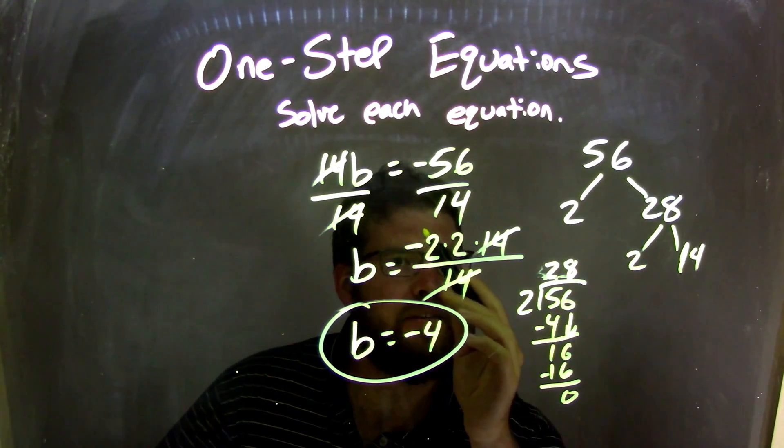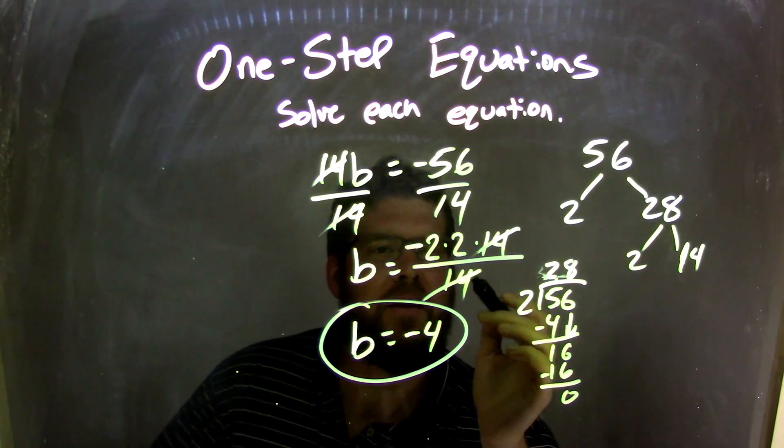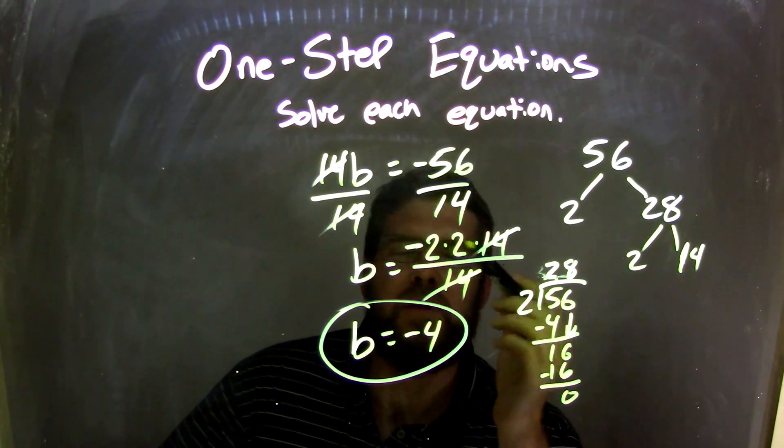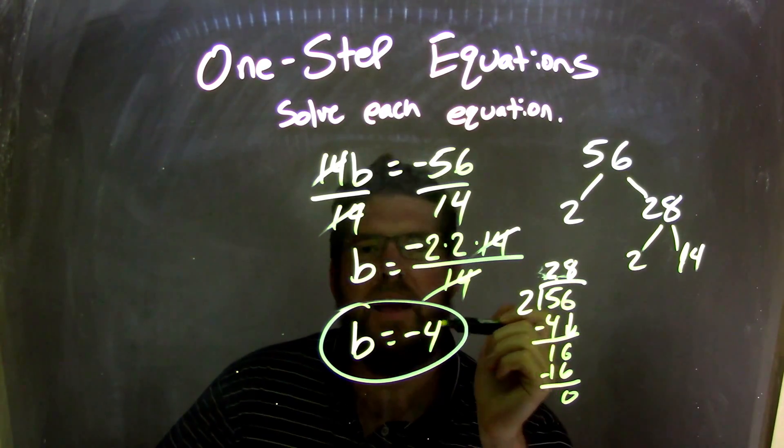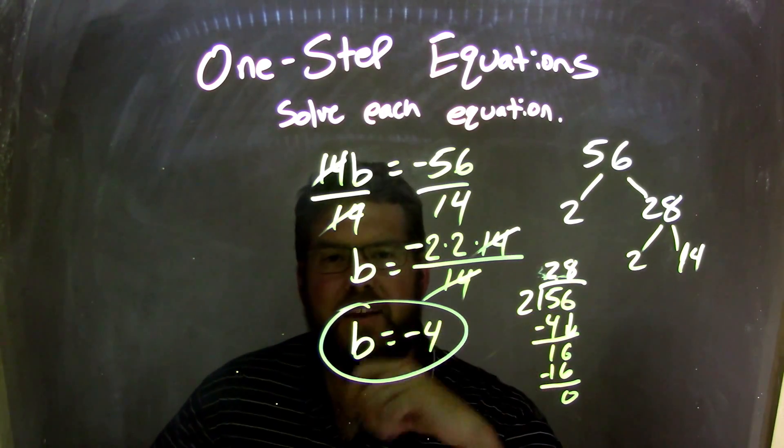And the 14s in the denominator, the 14s would cancel. So now we're left with negative 2 times 2, which is negative 4. And so b equals negative 4 is my final answer. Thank you.